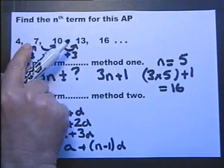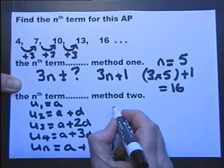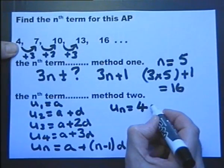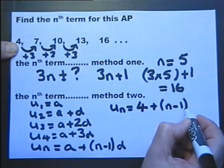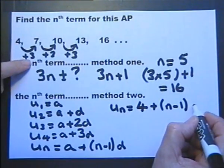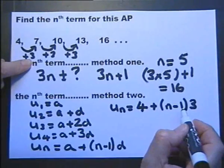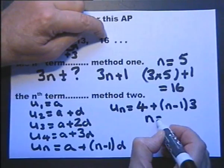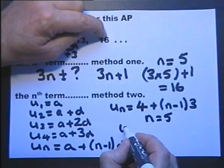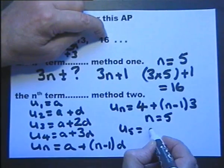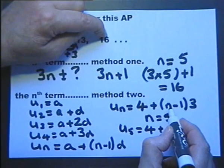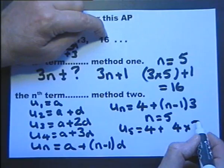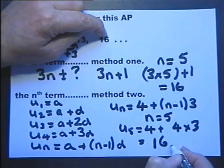Let's apply this to our particular arithmetic progression. The first term a is 4, and the common difference d is 3, so the nth term is 4 plus (n minus 1) times 3. Let's verify with the fifth term: n equals 5 gives 4 plus (5 minus 1) times 3, which is 4 plus 12, equals 16. It works.